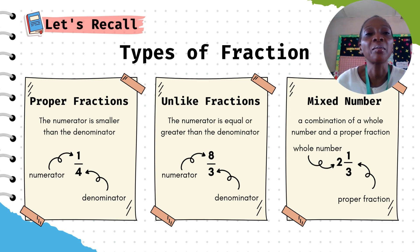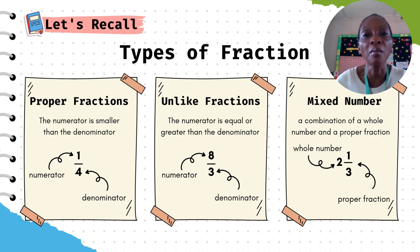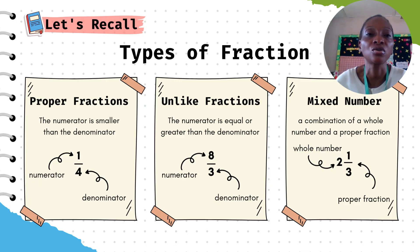Another type of fraction is a mixed number, which is a combination of a whole number and a proper fraction. For example, we have 2 whole number 1 over 3. Your 2 is the whole number, the 1 is the numerator, and the 3 is the denominator. That's a mixed number because whole numbers are mixed with fractions.